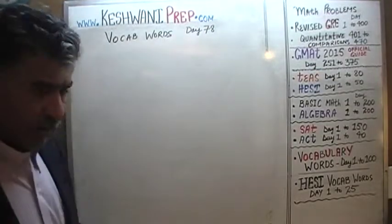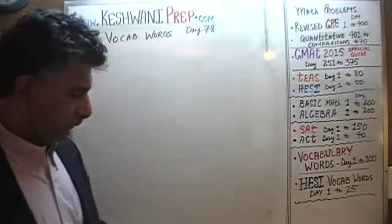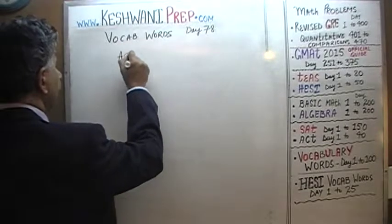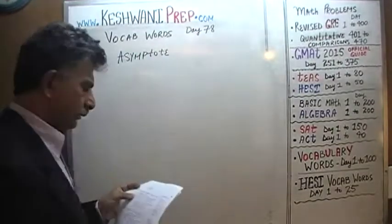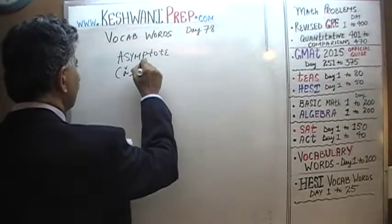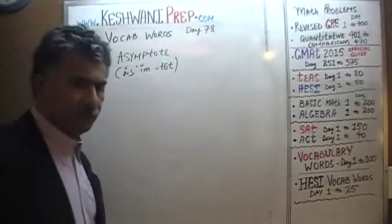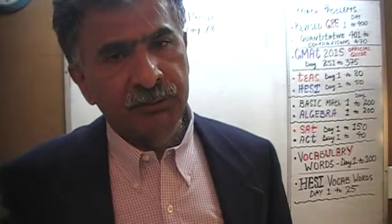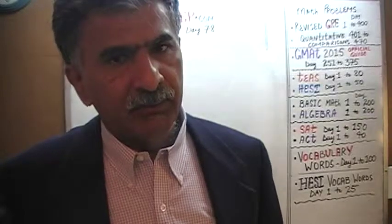The very first word we have is actually a mathematical term. The term is an asymptote. An asymptote is an upper limit on the curve — the highest value that a curve can achieve. The line that indicates that upper limit is called an asymptote.